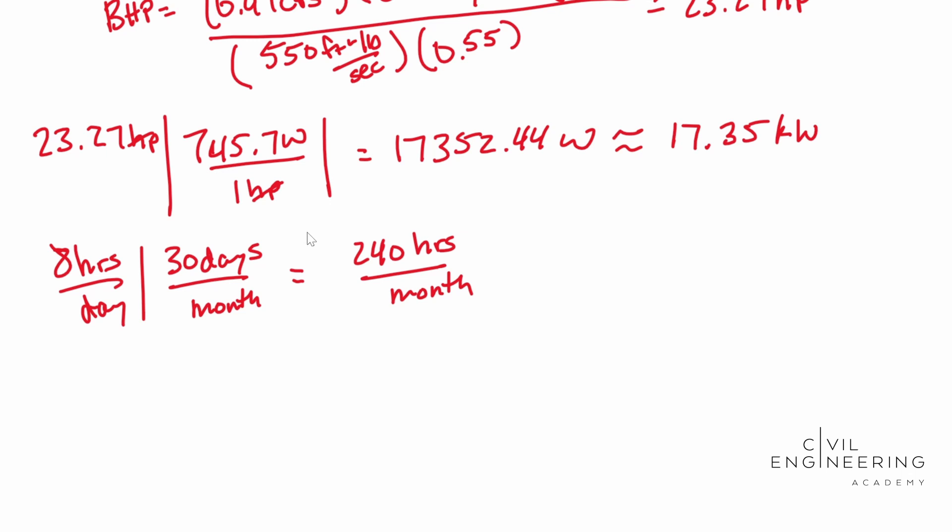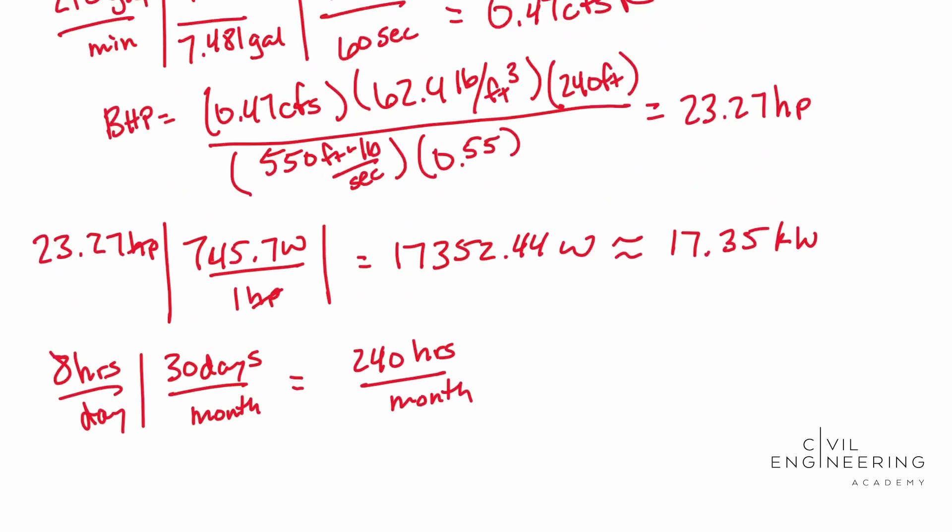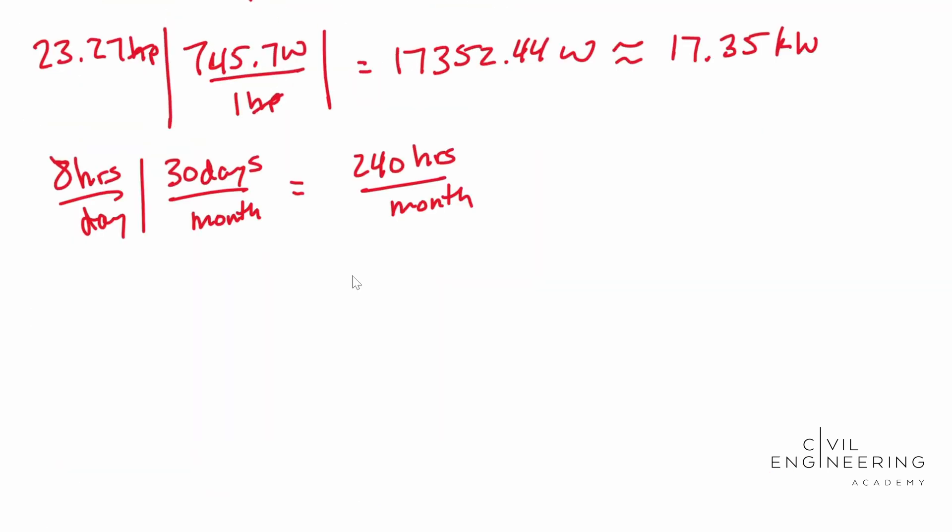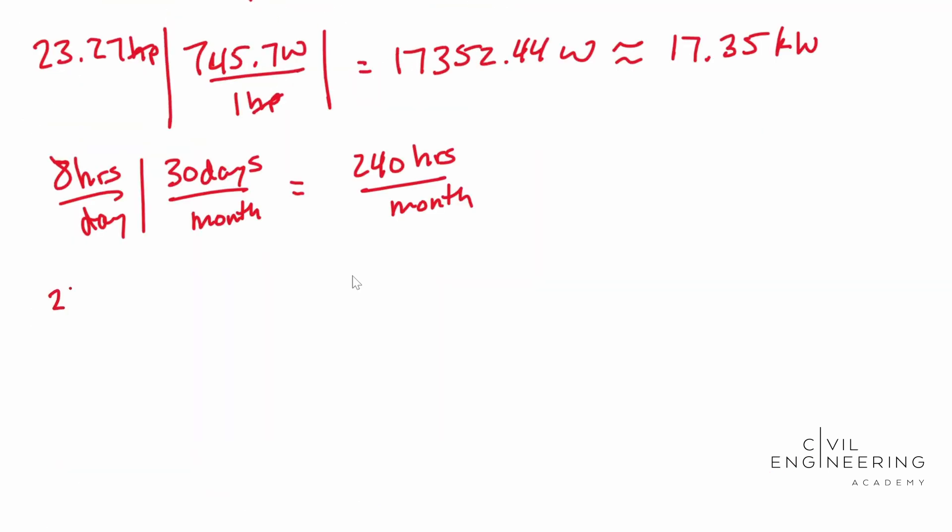So now we can use that and ultimately multiply out what we got. So we got, let's see, 12 cents per kilowatt hour, eight hours per day. So now we can just solve it out now. So now we can just multiply this stuff out. So we end up with 240 hours per month and we can start canceling some stuff out. Multiply that by our 17.35 kilowatts.